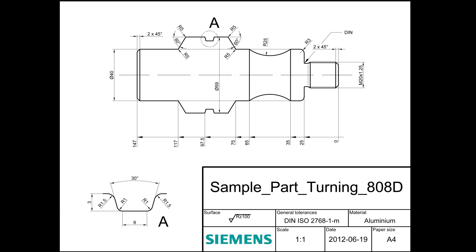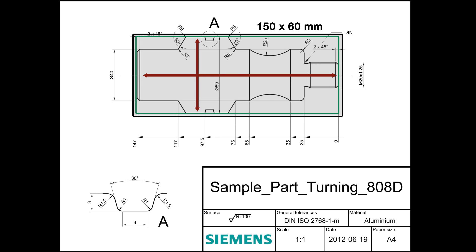As seen from the drawing, the finished part is 147mm long and 59mm diameter. Therefore, we take a raw billet that has a length of 150mm and a diameter of 60mm.